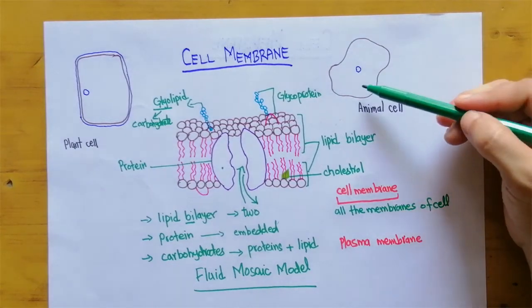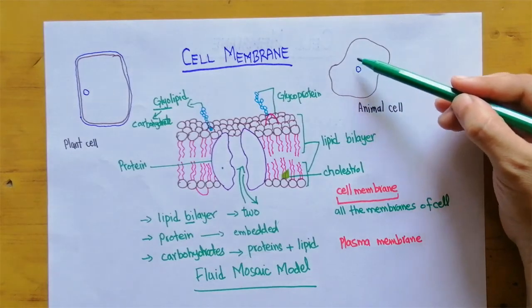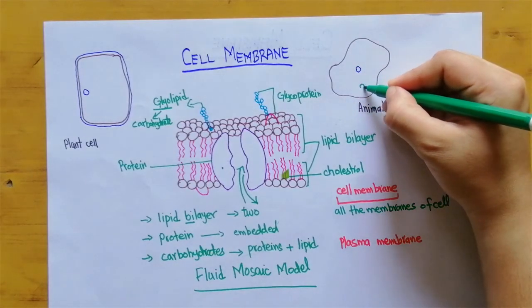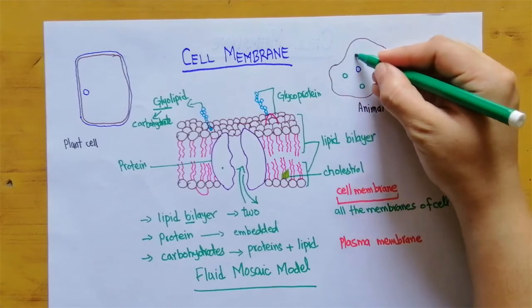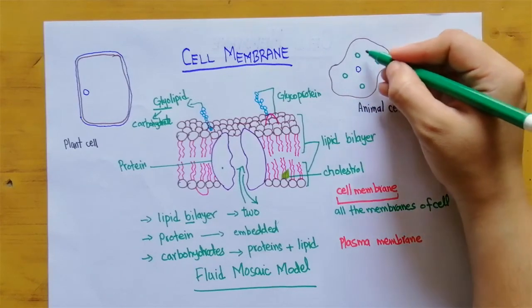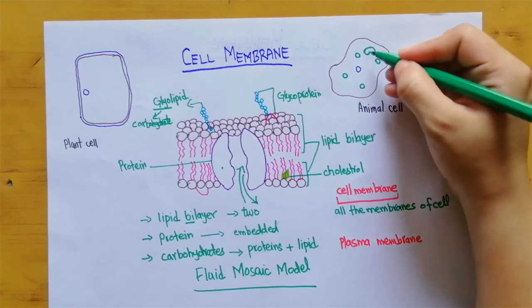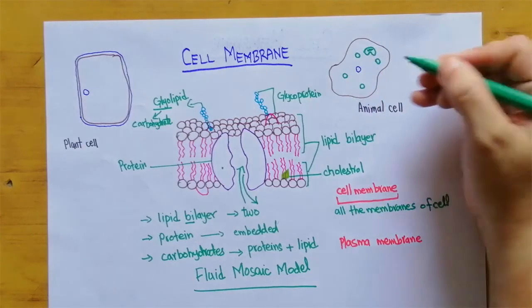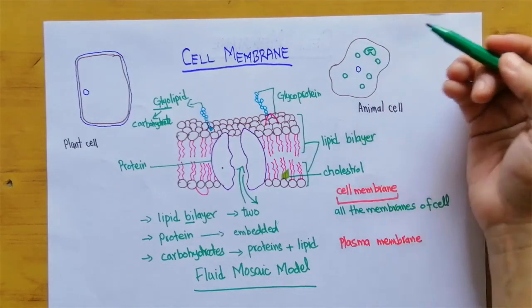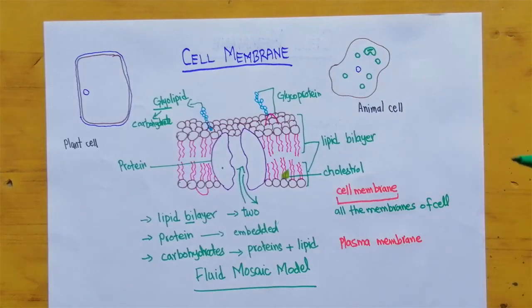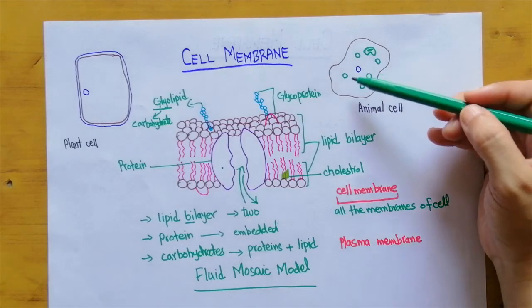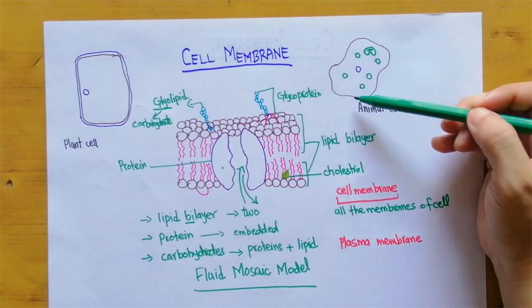We know that there are so many cell organelles present inside the cell. For example there are vacuoles present which have membrane, there are mitochondria present which have membrane, there are lysosomes present or the golgi apparatus. So when we talk about cell membrane we are referring to all the membranes which are present inside the cell or surrounding the cell organelles.